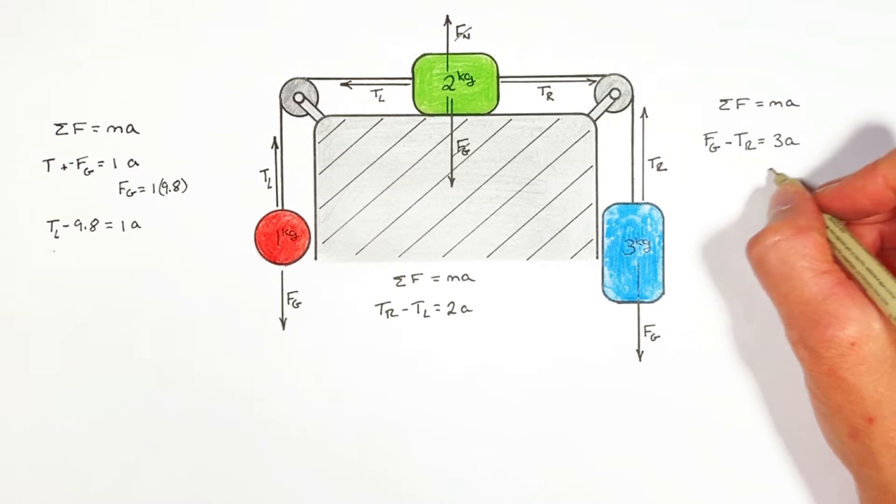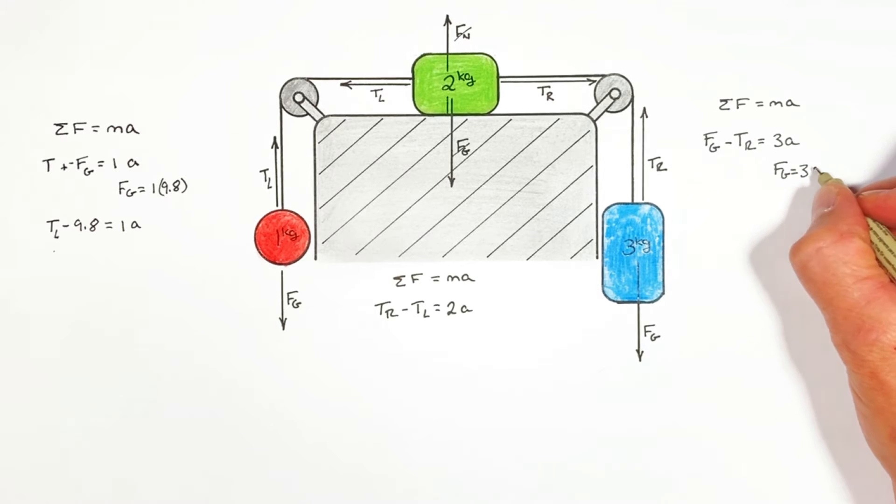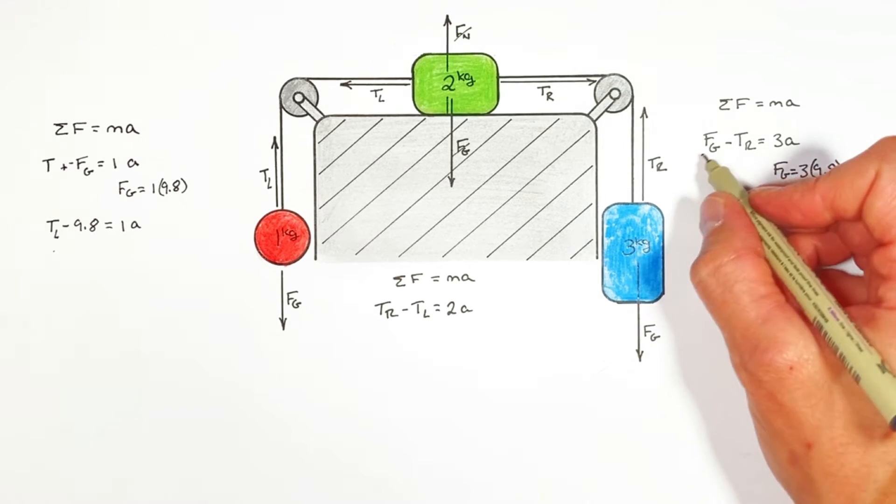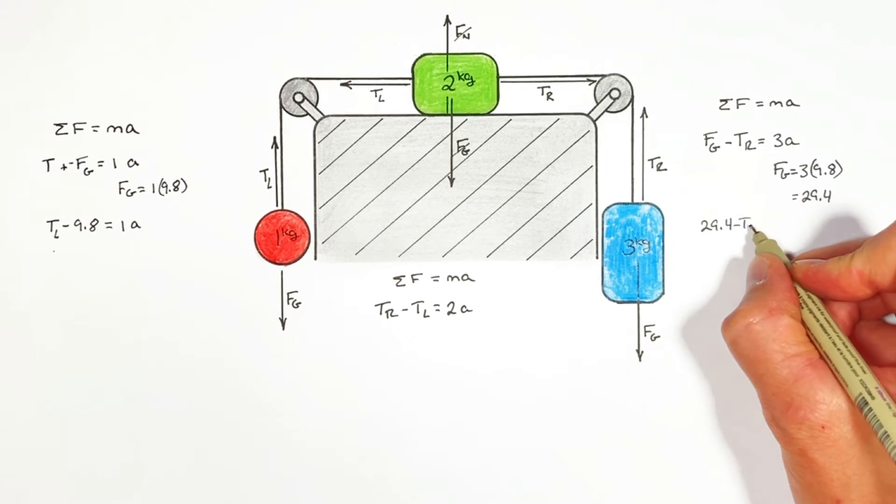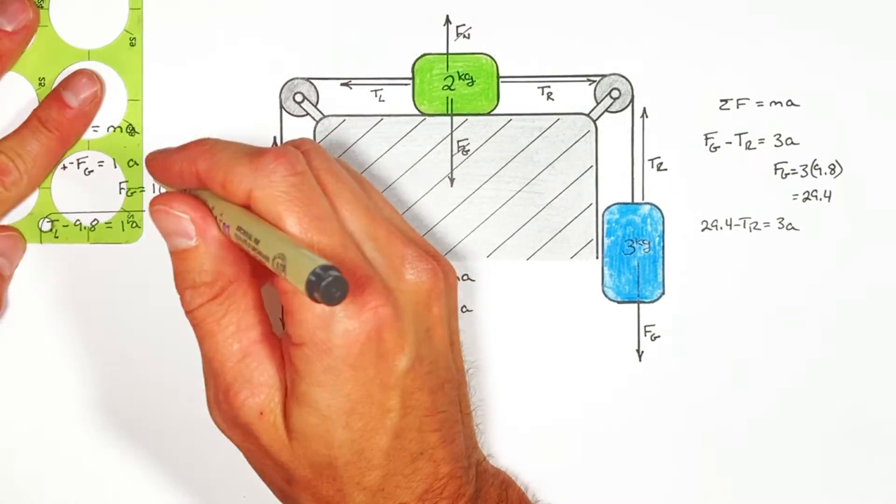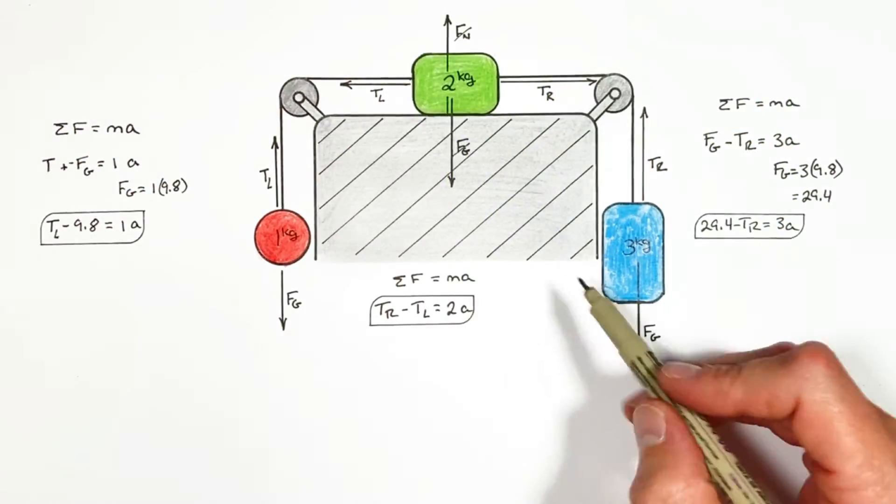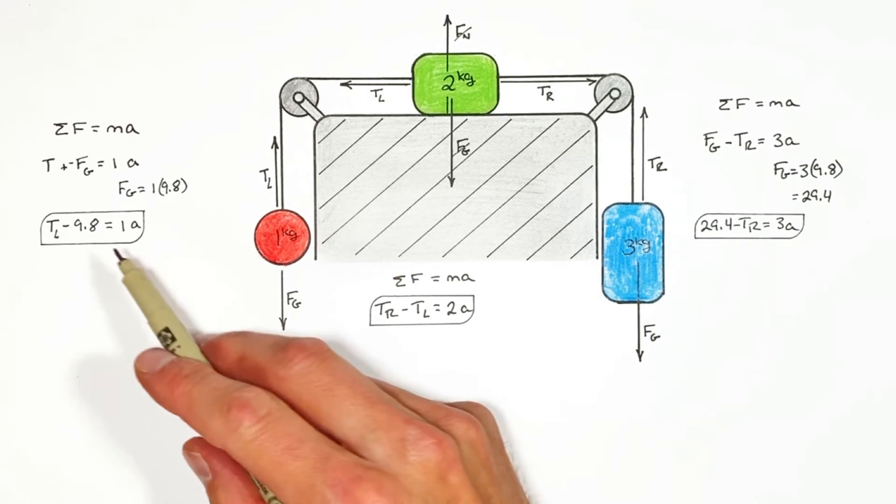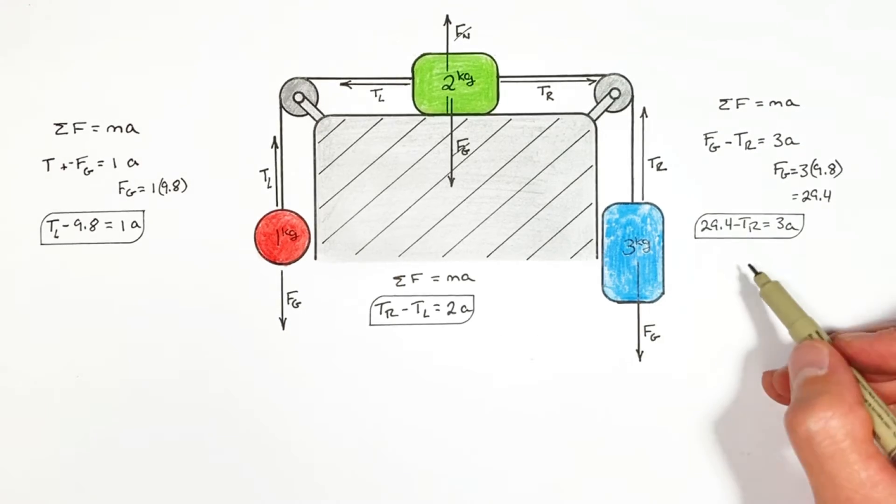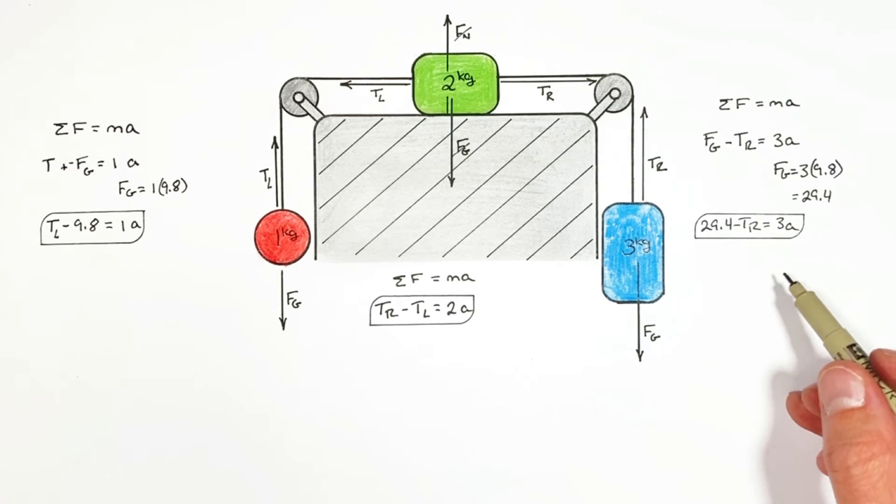Now for this block the force by gravity is going to equal three times G. That's 29.4 Newtons. So subbing that in. We now have three equations with three unknowns. So all we need to do is rearrange these equations and substitute them in. Which means we're done the physics of this problem. All we have left is math.